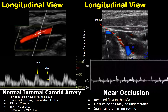Here is a case of near occlusion. There is reduced flow in the internal carotid artery — the flow velocities may be undetectable or greatly reduced. There is also significant lumen narrowing. We can see a very small waveform on spectral Doppler, and this type of waveform may be seen in near occlusion.